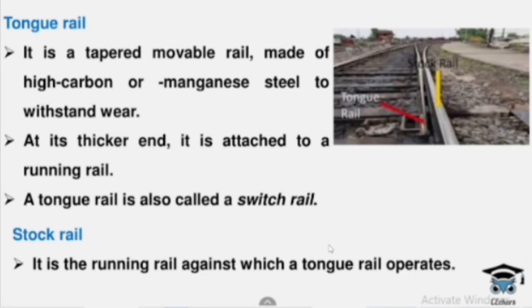The definition: it is a tapered movable rail made of high carbon or manganese steel to withstand wear. What is the movable rail? If we use a train, we use a tongue rail. At its thick end, it is attached to a running rail — we use a stock rail, which is thick.